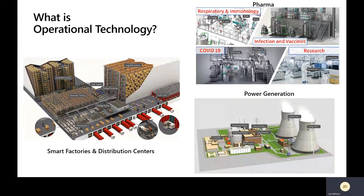Let's start with what is operational technology. There are a number of different customers we deal with: smart factories, distribution centers, pharma technologies, power generation, and more. Each one has different operational technology equipment, from robotics to valves and pumps. If you look at power generation, that includes cooling towers, turbines, containment buildings, and control rooms. There are many different components within operational technology.